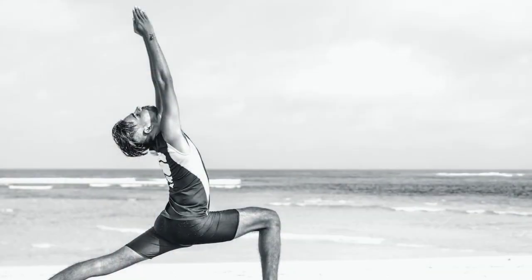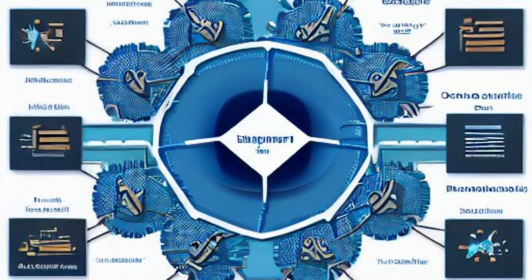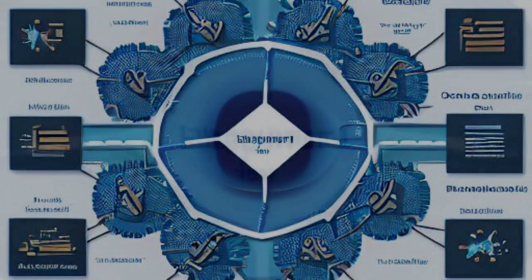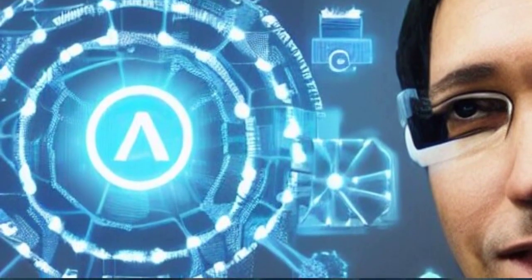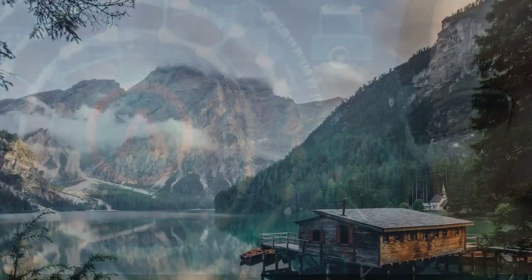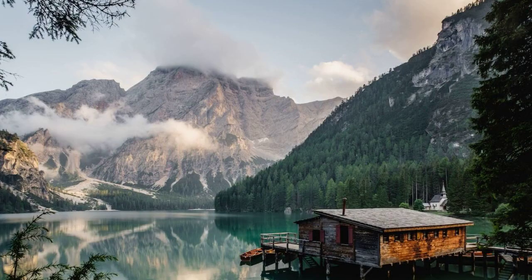Section 6: Integrating Innovation. Delve into the integration of innovation in software crafting. From AI and machine learning to blockchain, discover how cutting-edge technologies are reshaping the landscape and offering new dimensions for business success.